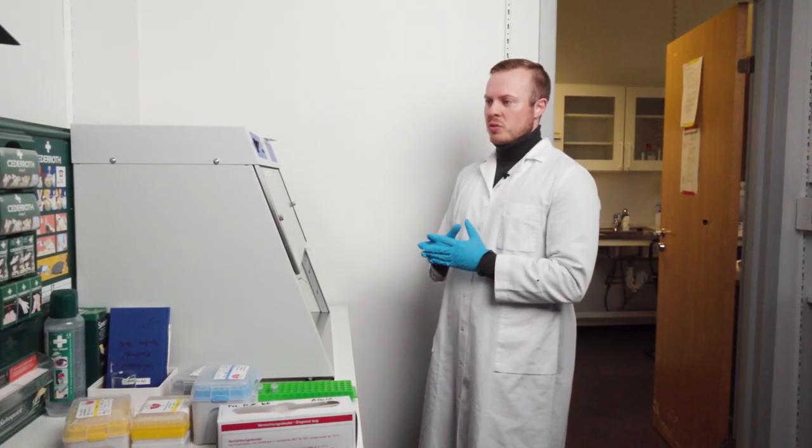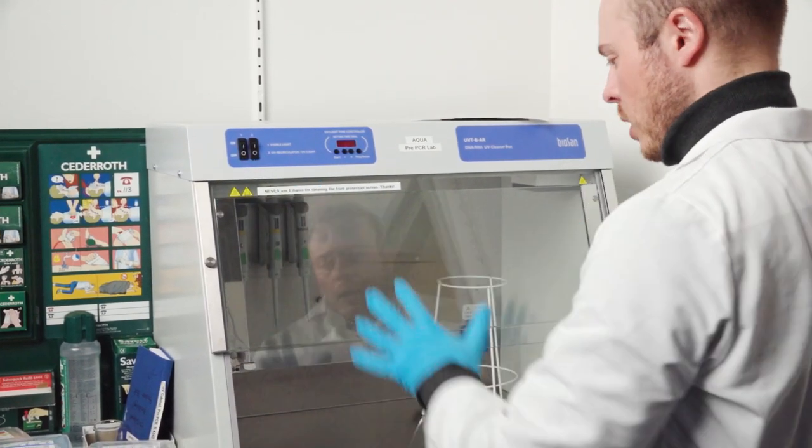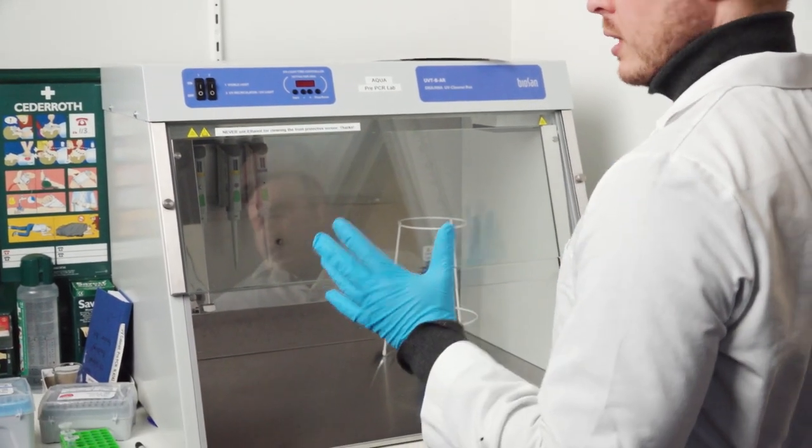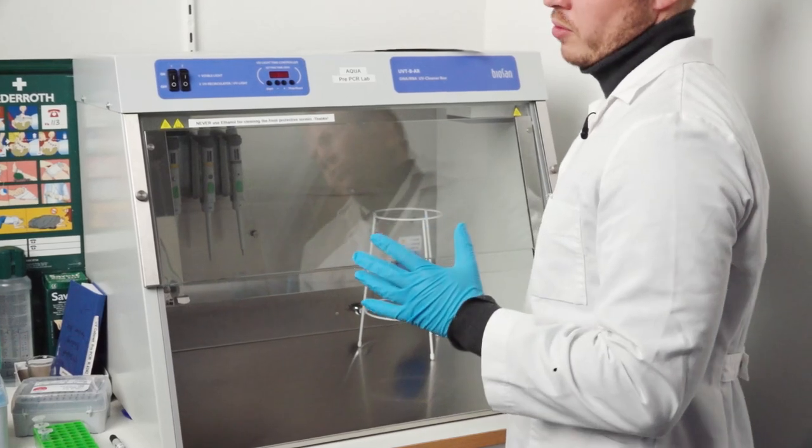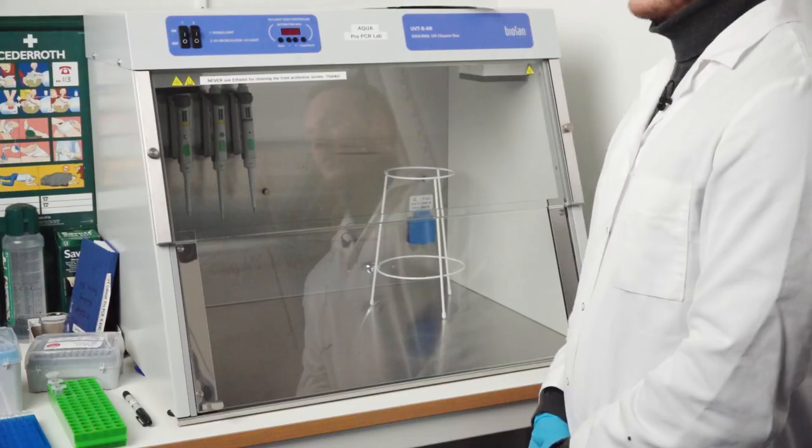So when you approach the UV cabinet all of the switches should be off, no lights, that indicates that it's totally off. So the first thing we do is just to check that the door is locked down because it should always be locked down when it's off.